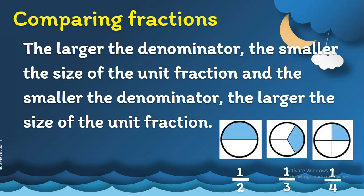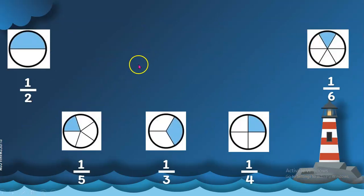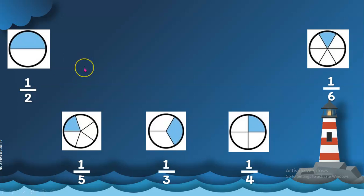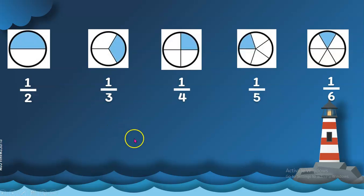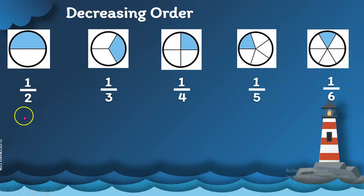There you go. So again, we have here one-half, and if we're going to arrange this in decreasing order, it will be one-half followed by one-third, then one-fourth, one-fifth, and then one-sixth. This is the decreasing order — the fractions are getting smaller.